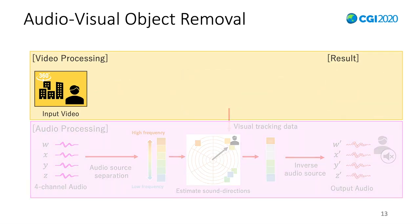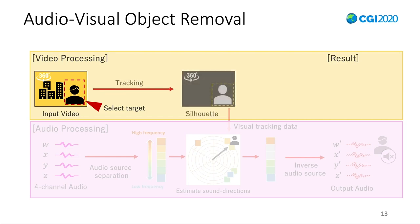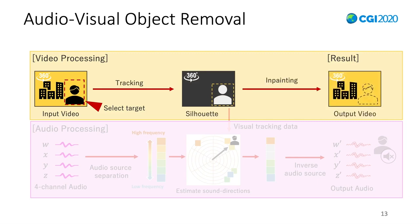This is video processing. First, a user chooses the target in the initial frame manually. Through whole frames, the target's silhouette masks are estimated. Then, with the masks, the target is removed visually with the video inpainting method.